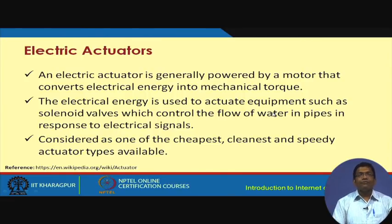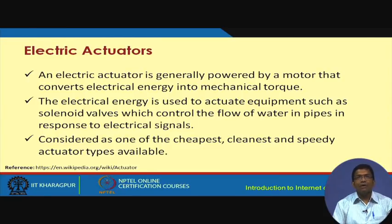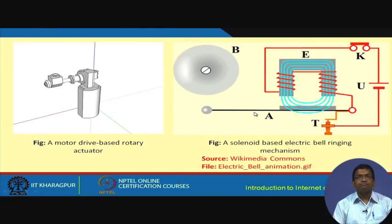Next are electric actuators. An electric actuator is generally powered by a motor that converts electrical energy into mechanical torque. This electrical energy is used to actuate equipment such as the solenoid valve, which controls the flow of water in pipes in response to electrical signals. The solenoid valve shown at the outset works on the principle of an electrical actuator.